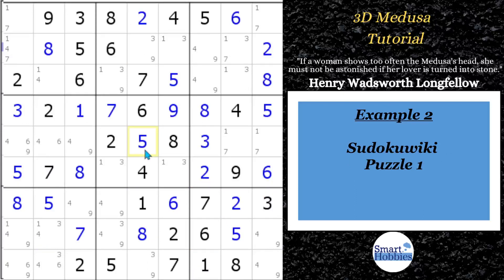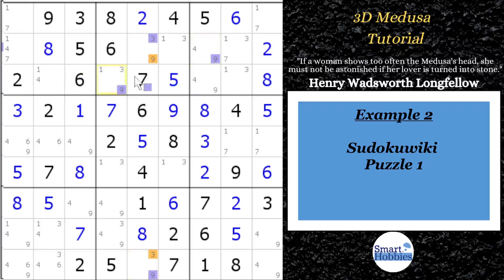For our next example, we'll cover how you can solve multiple cells at one time. This is from the Sudoku Wiki — this puzzle highlights a particular rule, and I got all of these 3D Medusa rules from that wiki. Starting here with three as purple, working through the conjugates, going to the nine — there's only one other nine, so I can mark that, and one other nine in the block. Swapping over, this nine's conjugates are right there and there.